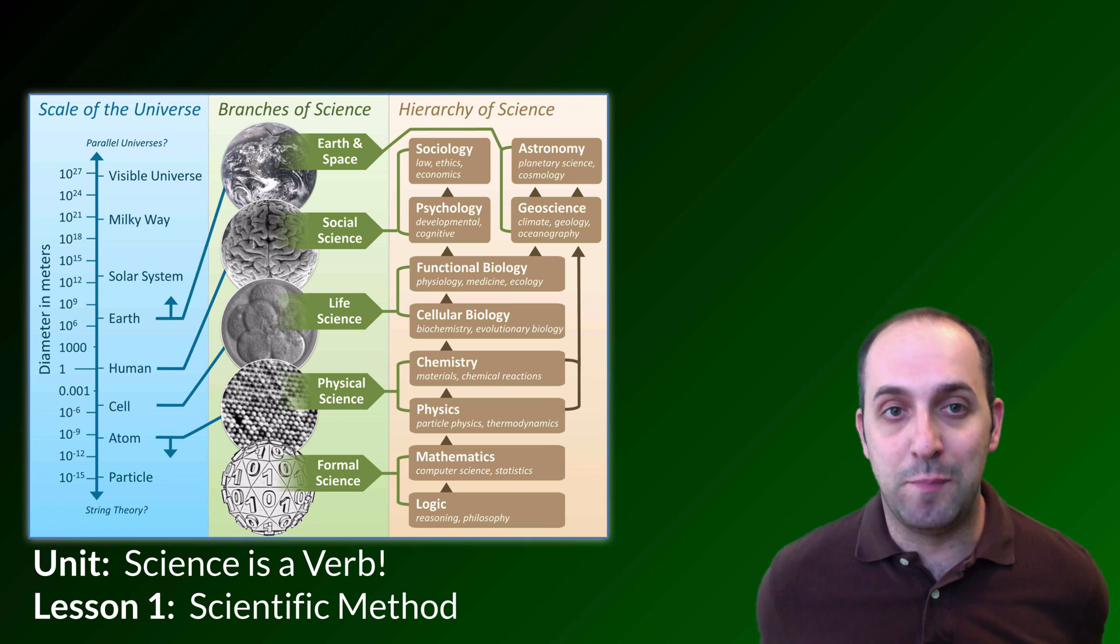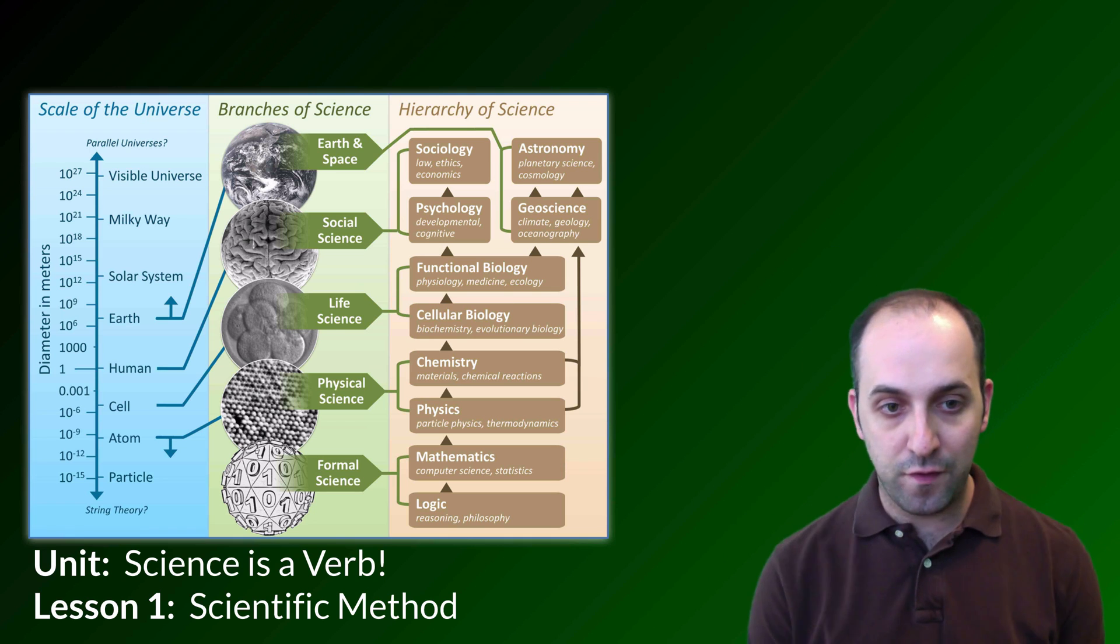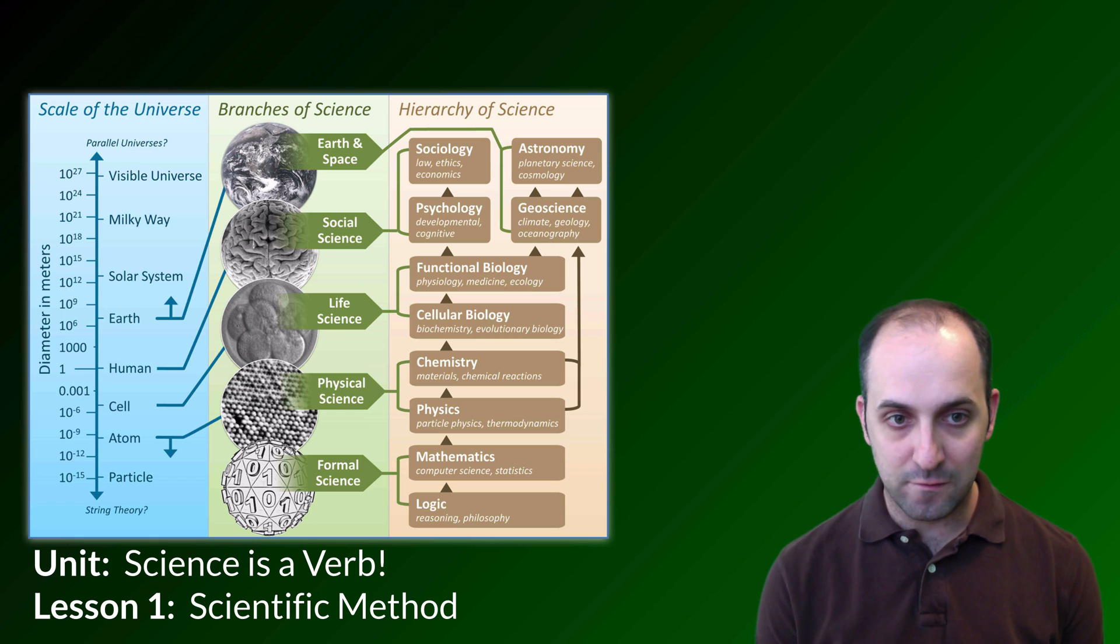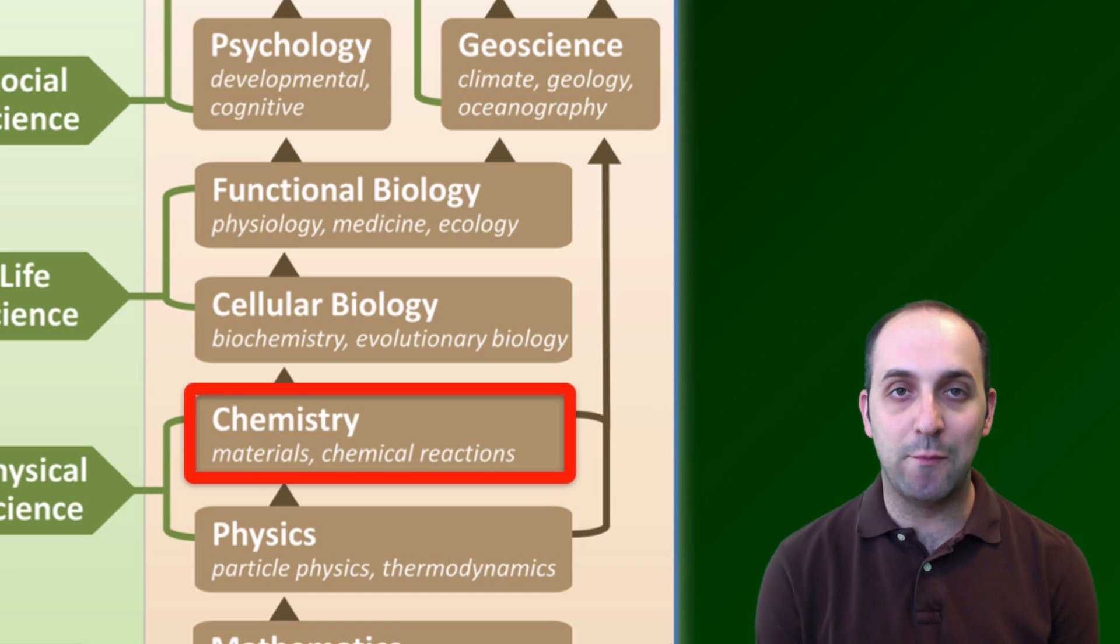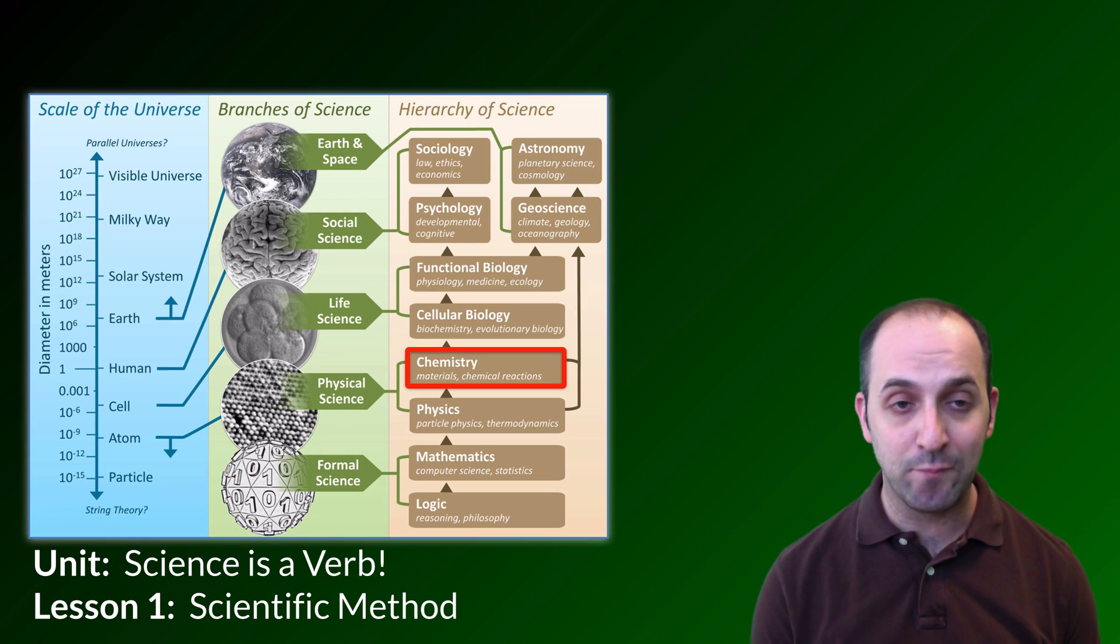So this is a picture of all of the sciences right here. Here you can see them all and we're going to focus for this course on this one, which is chemistry. Chemistry is a great subject to learn, but the nice thing about science is that they all basically work kind of the same way, and that's really what we're here to talk about in this unit: what is the process that scientists use to figure out what's going on in the world and in their particular field of study.